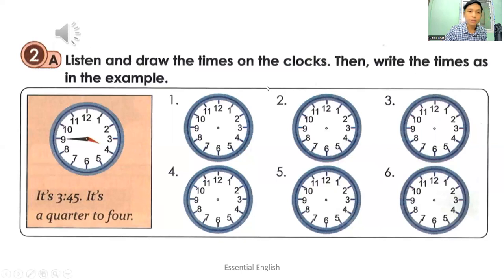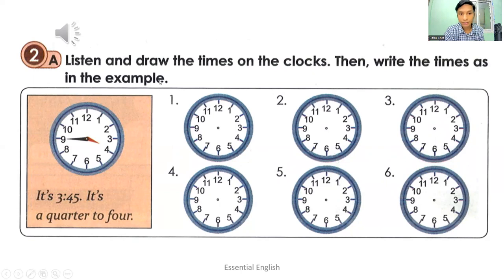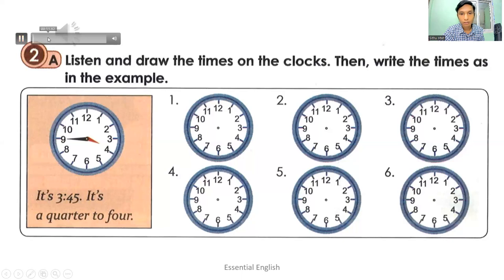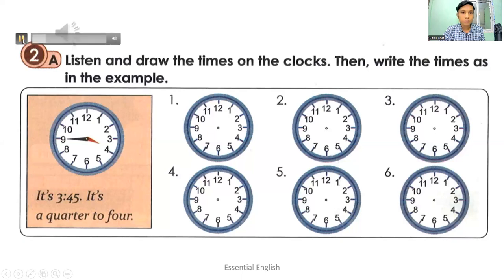Exercise 2E: Listen and draw the times on the clocks, then write the times as in the example. You have to listen to the recording, draw the times on the clocks, and write the times. For example: it's 3:45 — it's a quarter to four.